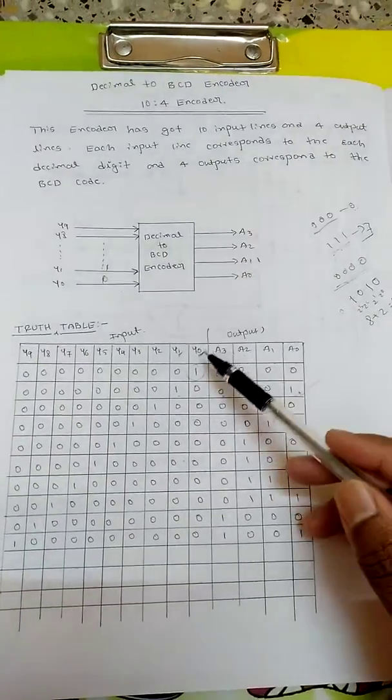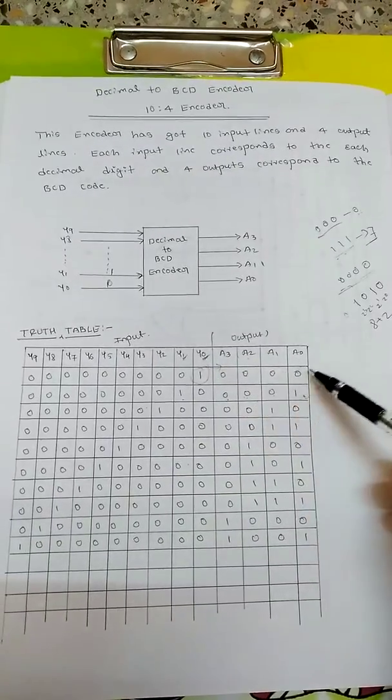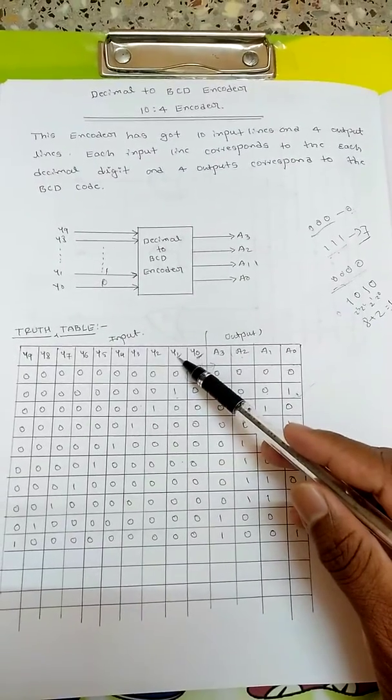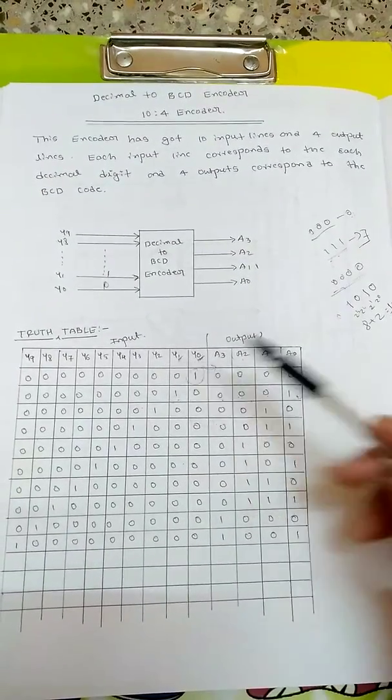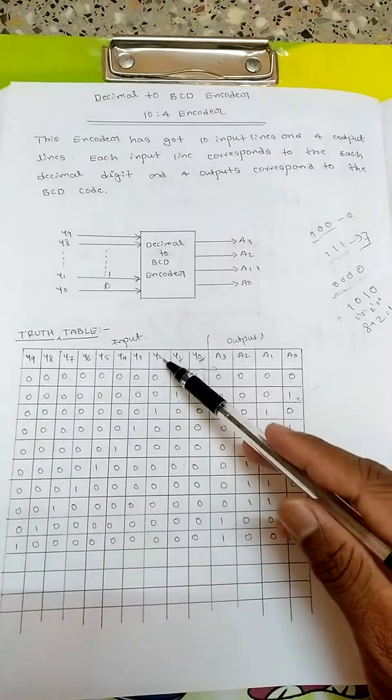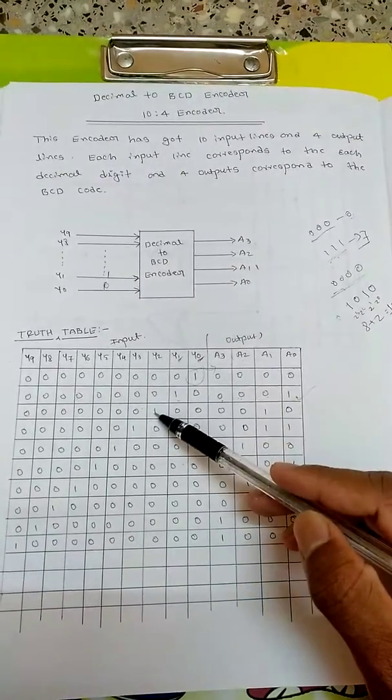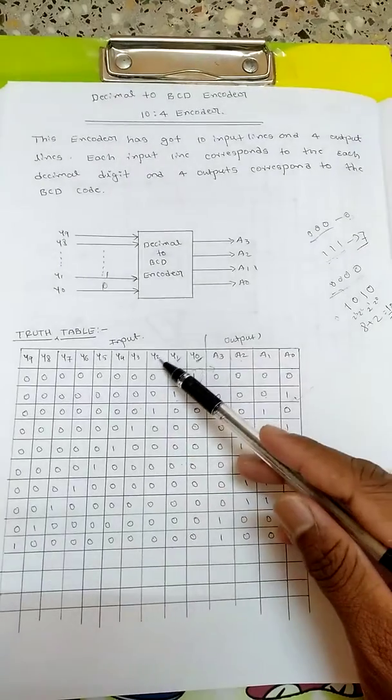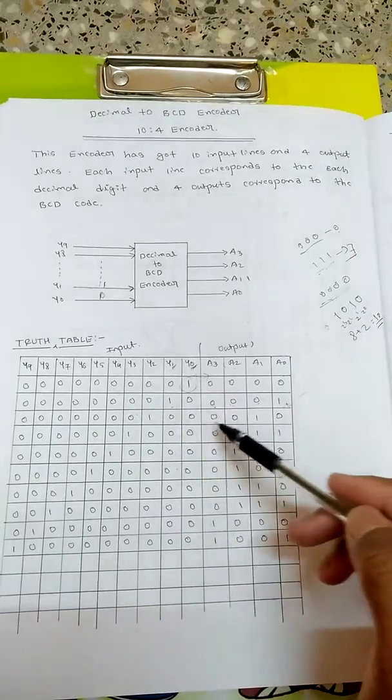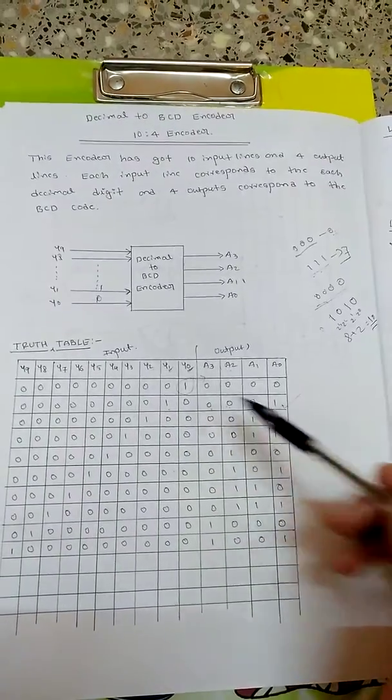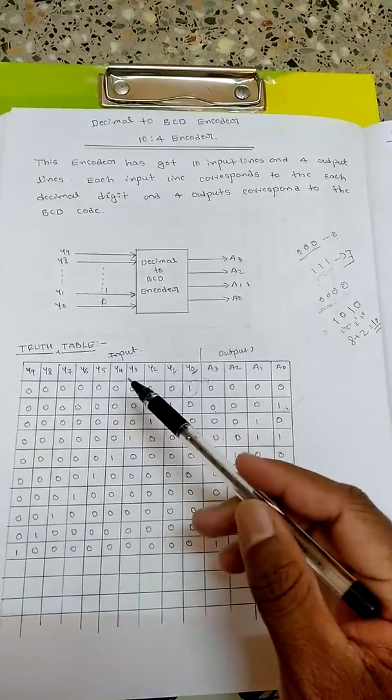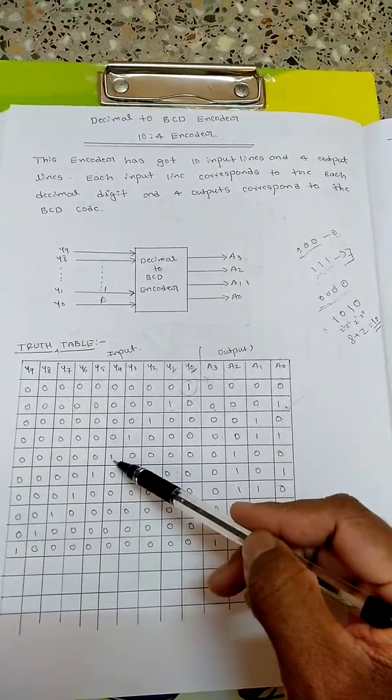So y0 is high and equivalent of 0 will be getting at the output because it is a binary coded decimal where the decimal value is converted to binary and given as the output. So 0 equivalent in BCD will be 0000 itself. Next case is when y1 is high. One equivalent in binary is 0001.